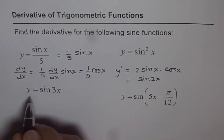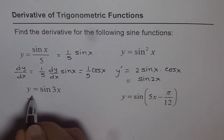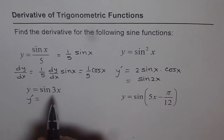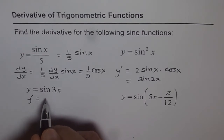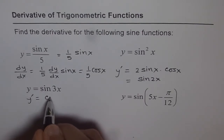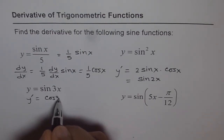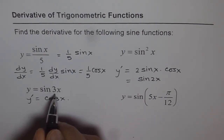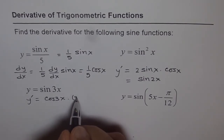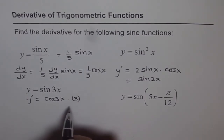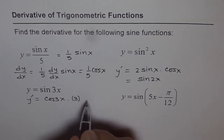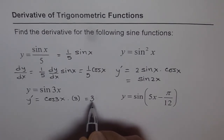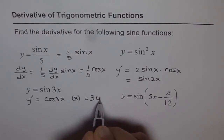The third one is y equals sine 3x, so what is y-dash? y-dash is the derivative of sine 3x, which is cos 3x, times the derivative of the angle, which is 3. So we can write this as equal to 3 times cos 3x.